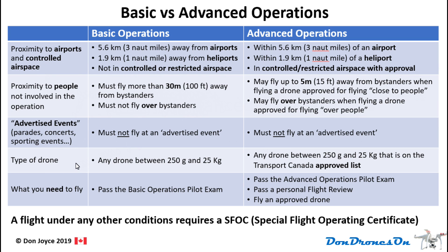There are also restrictions on the types of drones you can fly under these two certificates. If you're flying a drone less than 250 grams, none of these rules apply and you are free to fly anywhere you want — safely, of course. If your drone is between 250 grams and 25 kilograms, you can fly any drone in that weight class under basic operations. However, if you're going to fly in an advanced operation environment with that same weight class, it must be on the Transport Canada approved list. In the advanced operations video I'll provide a link to that approved list.